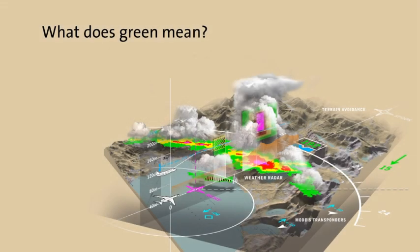Someone once said beauty is in the eye of the beholder. We could say the same thing about the color green and its meaning on the radar display.